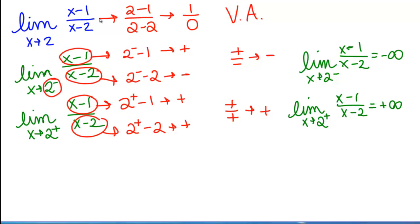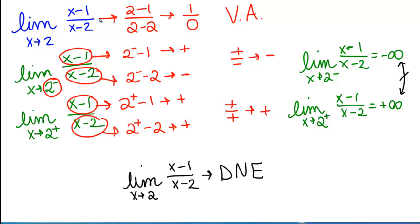In this example, we get negative infinity on the left side and positive infinity on the right side. Since these answers do not agree, the limit as x goes to 2 of (x−1)/(x−2) does not exist. The method is: first determine the form is non-zero over zero; then take one-sided limits; then determine whether each is positive or negative by examining each term; then compare the one-sided limits to get the final answer.